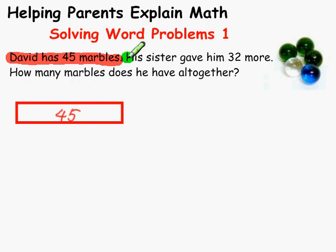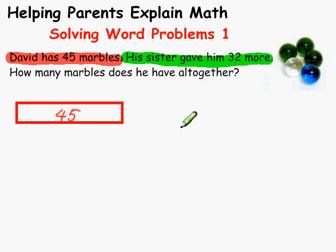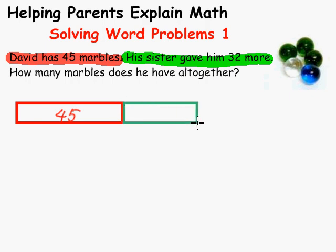His sister gave him 32 more, so I'm supposed to add that on to the 45. So I make a block there — the blocks don't have to be the right size or anything — and write 32. But it's added on.